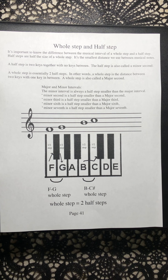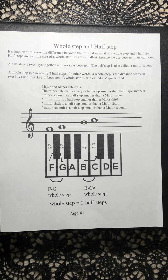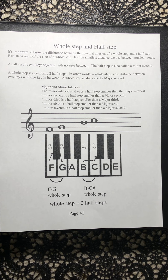The minor third is a half step smaller than a major third. The minor sixth is a half step smaller than a major sixth. The minor seventh is a half step smaller than a major seventh.